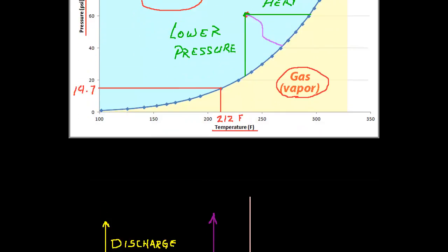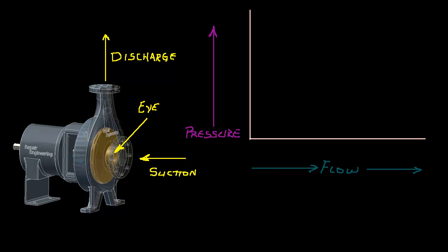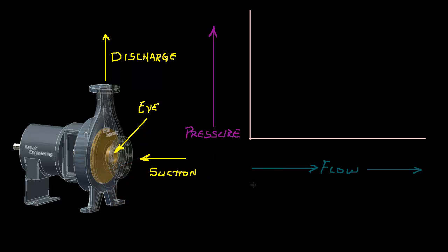In this next example, I'll show how this type of cavitation damage occurs. Here again is a picture of the pump with the areas we just identified — the suction, the eye of the impeller, and the discharge. On the horizontal axis of the graph, I'll chart the flow of the fluid as it moves through the pump. I'll call this location the suction portion of the pump, the discharge location here, and the location at the eye of the impeller here.